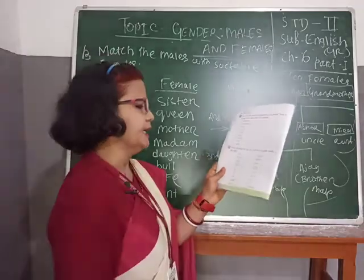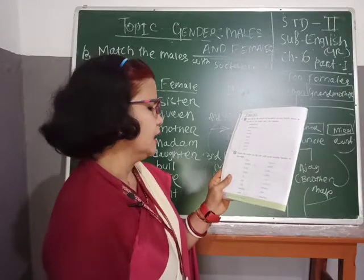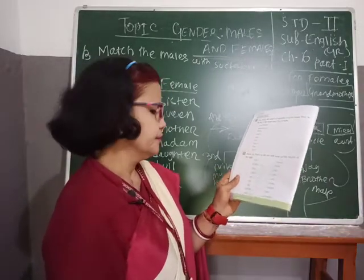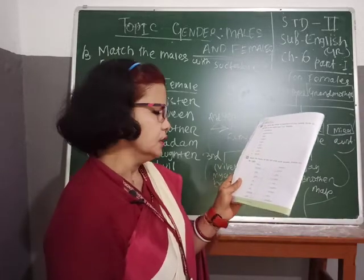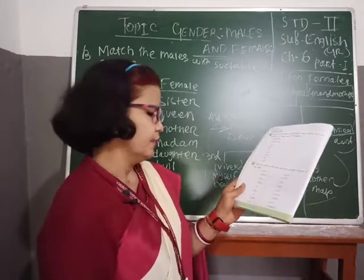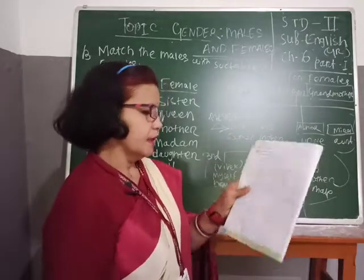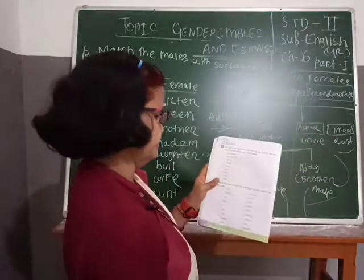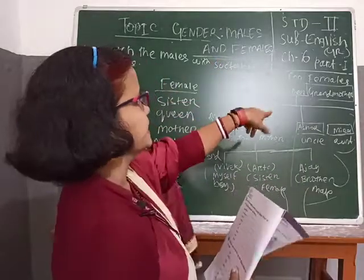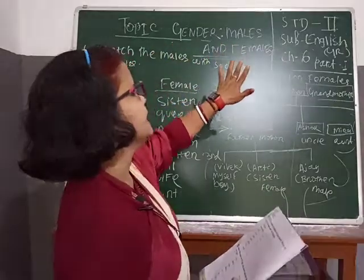I repeat again: Brother–Sister. King–Queen. Father–Mother. Sir–Madam. Son–Daughter. Cow–Bull. Husband–Wife. Uncle–Aunt. All of you complete. Now all of you read Chapter 6 — Gender, Males and Females.